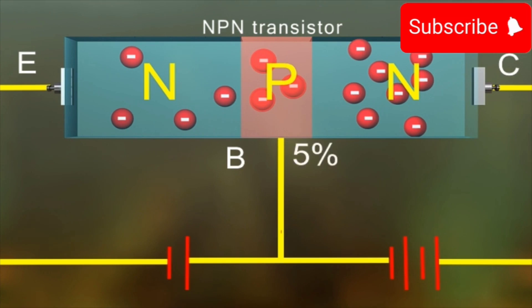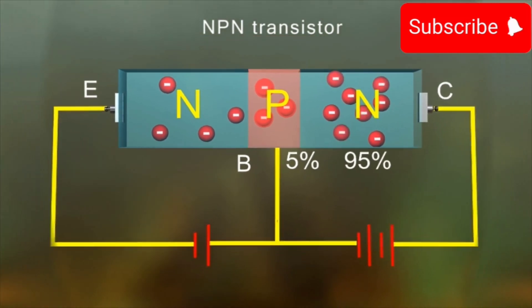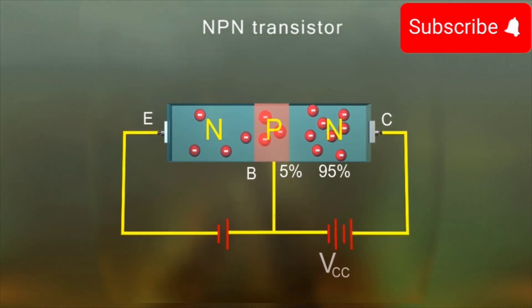Therefore, only 5% of the electrons entering the base combine with the holes present there. And the remaining 95% of them will enter the collector region due to the voltage VCC applied between the base and the collector.